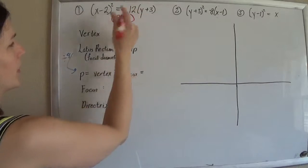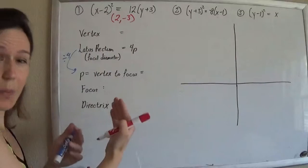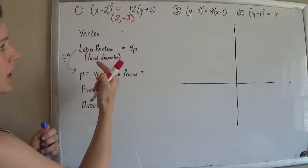So remember, when things are being shifted, things with the x affect the x, and when it's grouped in, it does the opposite of what you'd expect. So that becomes 2, and then left, negative 3.